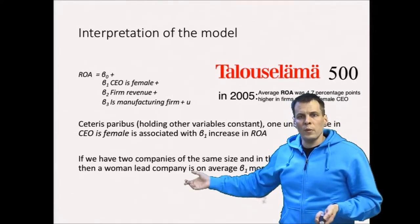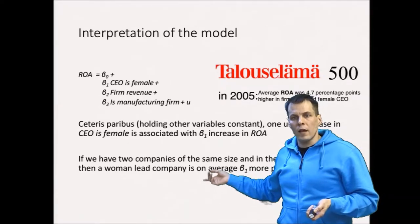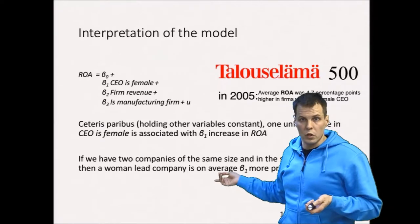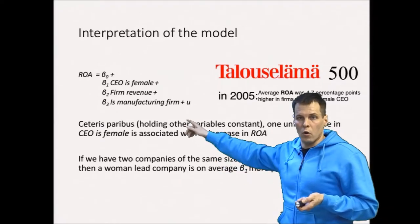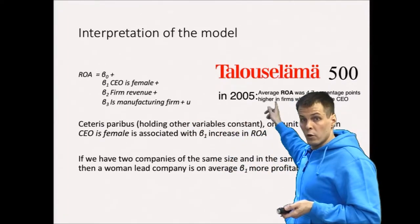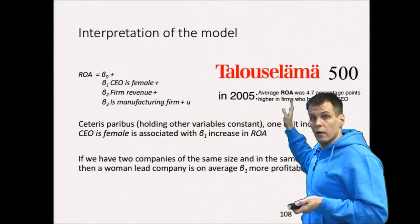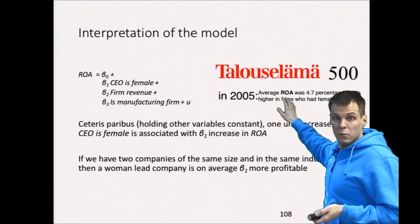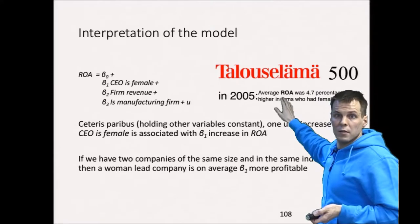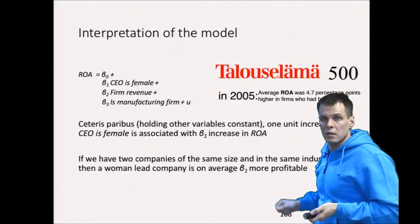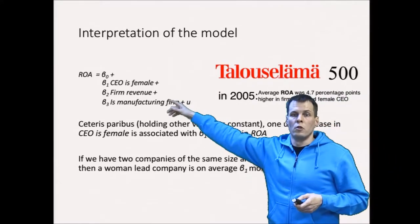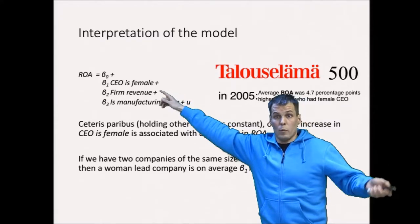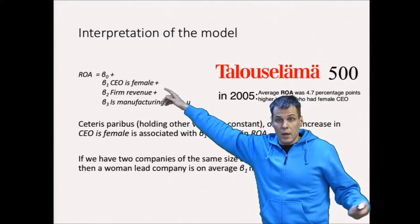Interpreting regression coefficients is relatively straightforward when variables have meaningful units. ROA has a meaningful unit for managers — if a manager says their company's ROA is 20 percent, we know that's pretty good for most industries. CEO gender is also interpretable: one means woman, zero means man.